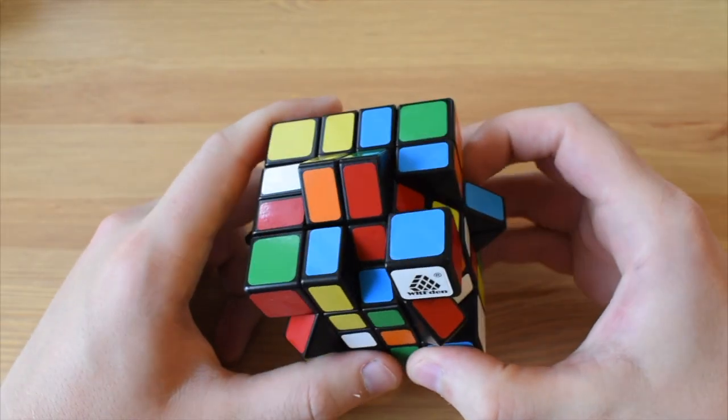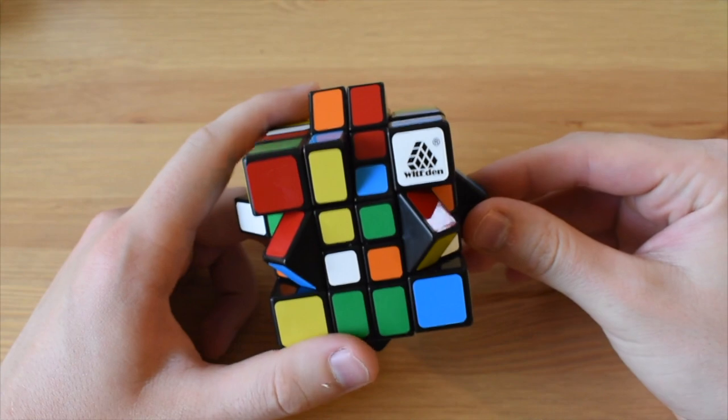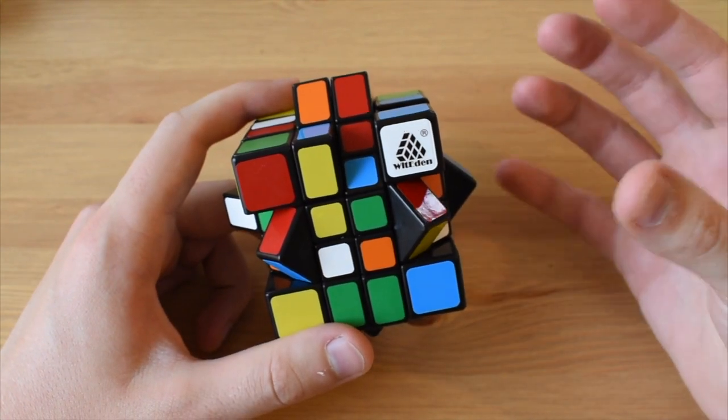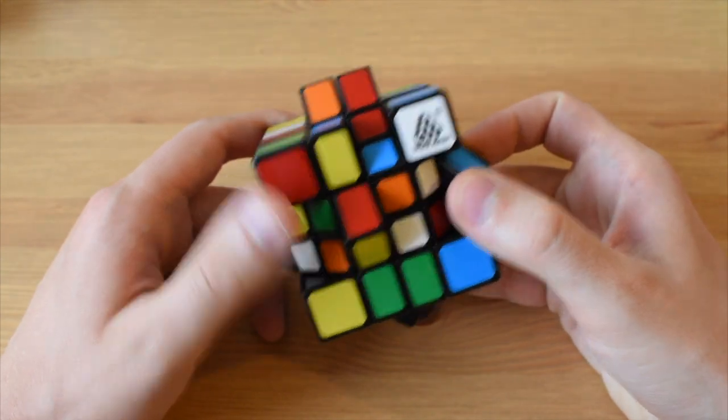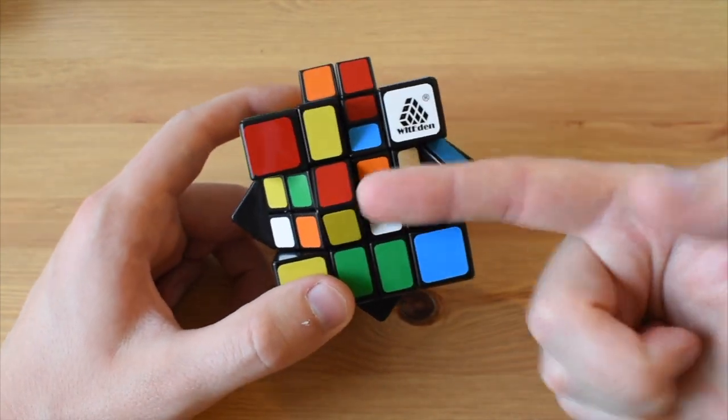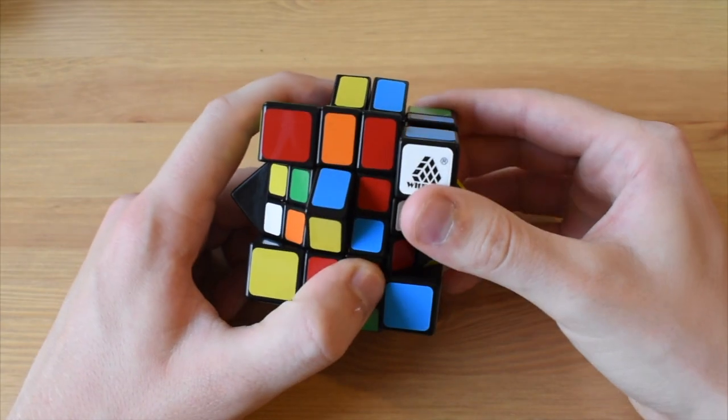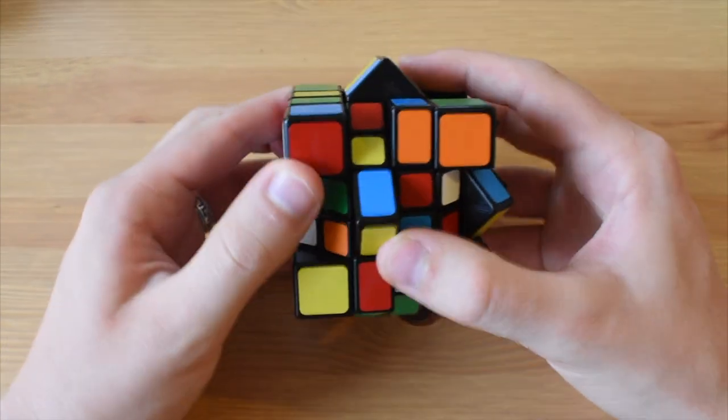For those of you that don't know, the mix-up cube or the mix-up 3x3 is basically a 3x3 Rubik's cube but you can make 45 degree turns in the middle slices, so that's this slice here and this slice here, and then you can go on and do extra moves.